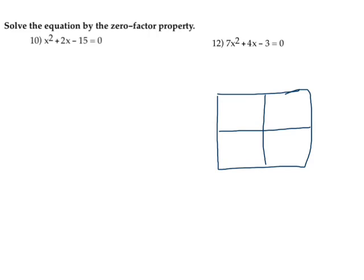In the first one we have x squared plus 2x minus 15 equals zero. So I'm going to write out, I have negative 15. I need the factors of negative 15 such that when added I get a positive 2.